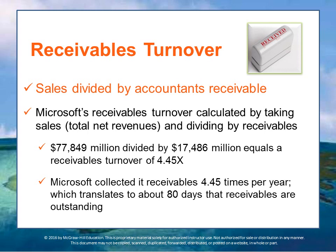Let's look first at receivables turnover. Sales divided by accounts receivable indicates how many times a firm collects its accounts receivable in one year. It also demonstrates how quickly a firm is able to collect payments on its credit sales — obviously, no payments means no profits. Microsoft, for example, collected its receivables 4.45 times per year, which translates to about 80 days, sometimes called days outstanding on the receivables.